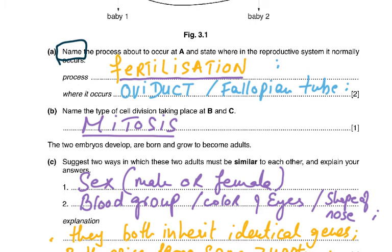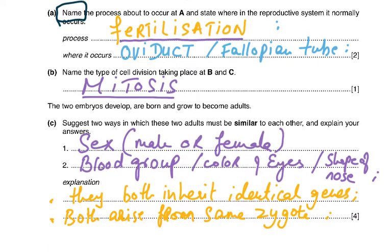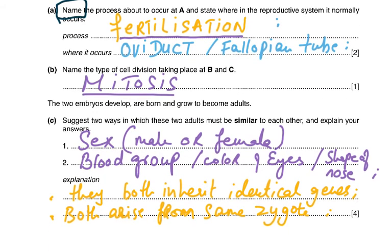The two embryos develop, are born, and grow to become adults. Suggest two ways in which the two adults must be similar: if one is a boy, the other must be a boy as well, because they developed from one zygote. They are genetically identical — their blood group will be the same, eye color the same, shape of the nose the same. You must have seen identical twins; they look exactly alike.